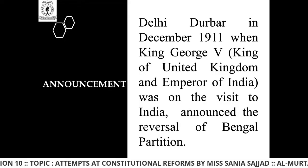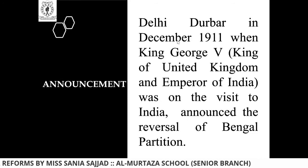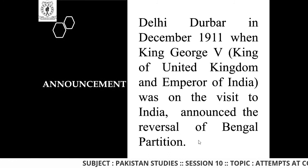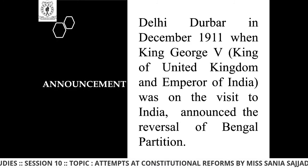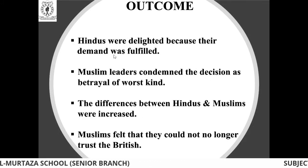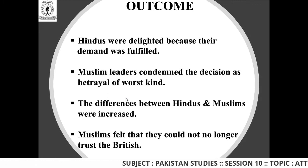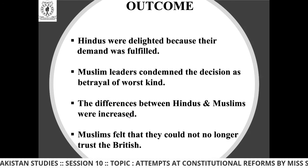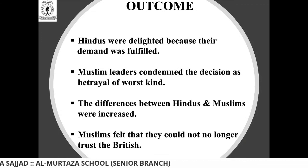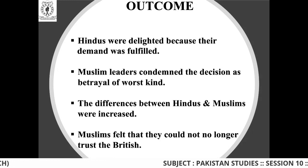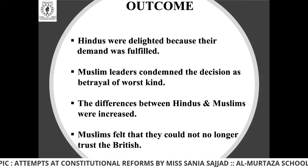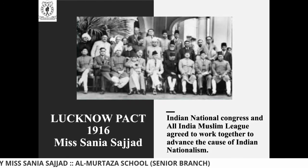At the Delhi Durbar in December 1911, King George — King of the United Kingdom and Emperor of India — was on a visit to India and announced the reversal of the partition of Bengal. The outcome was that Hindus were delighted because their demand was fulfilled. Muslim leaders condemned the decision as a betrayal of the worst kind. The differences between Hindus and Muslims increased, and Muslims felt they could no longer trust the British. In the partition of Bengal, Muslims had been in favor of the British and had supported them, but after the reversal in 1911, Muslims were against them.